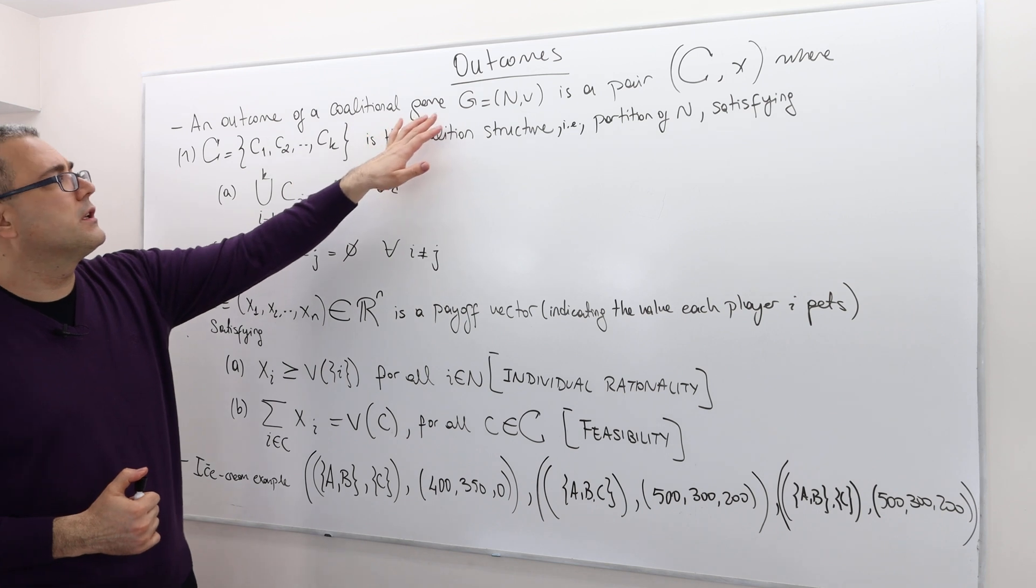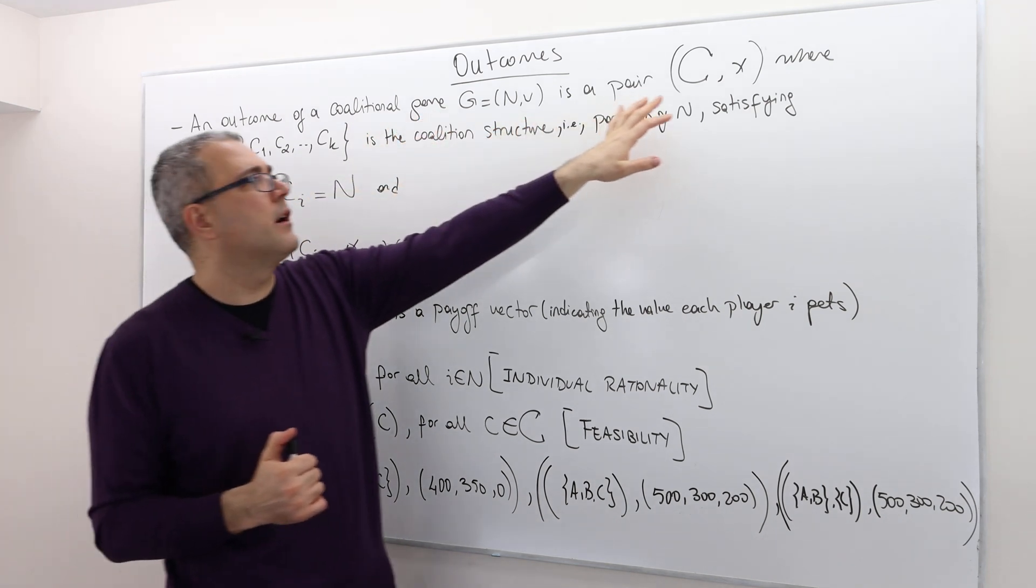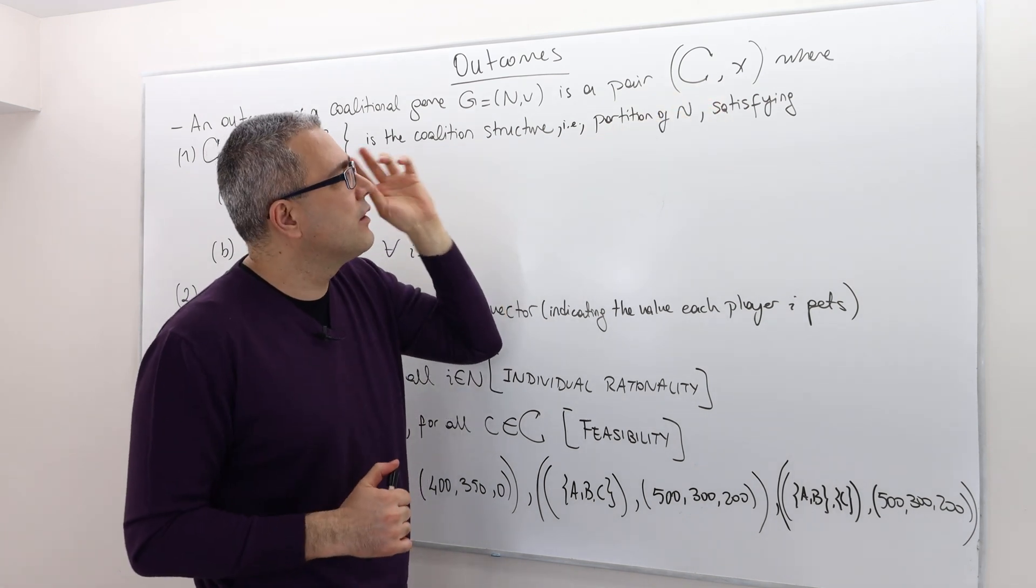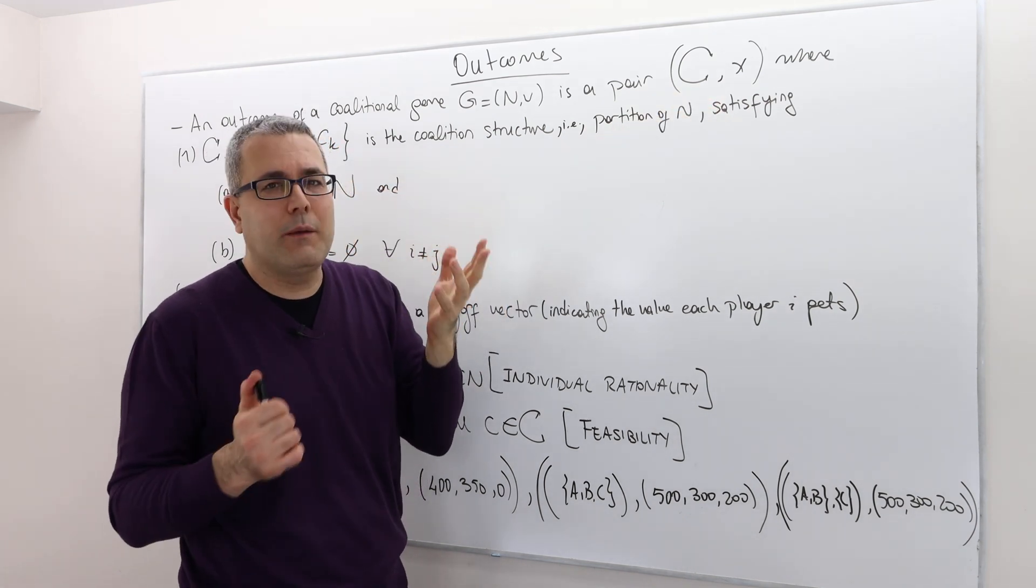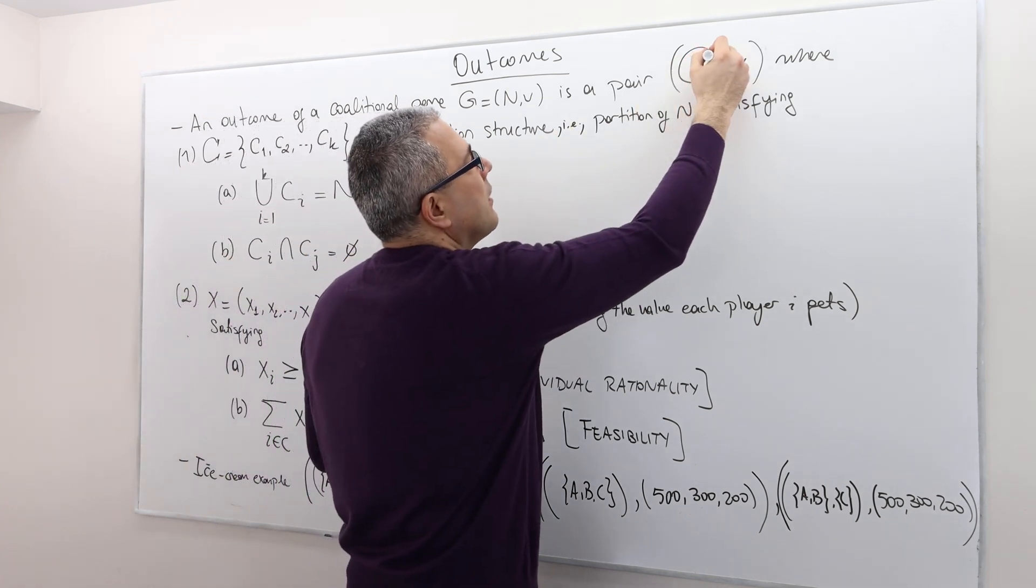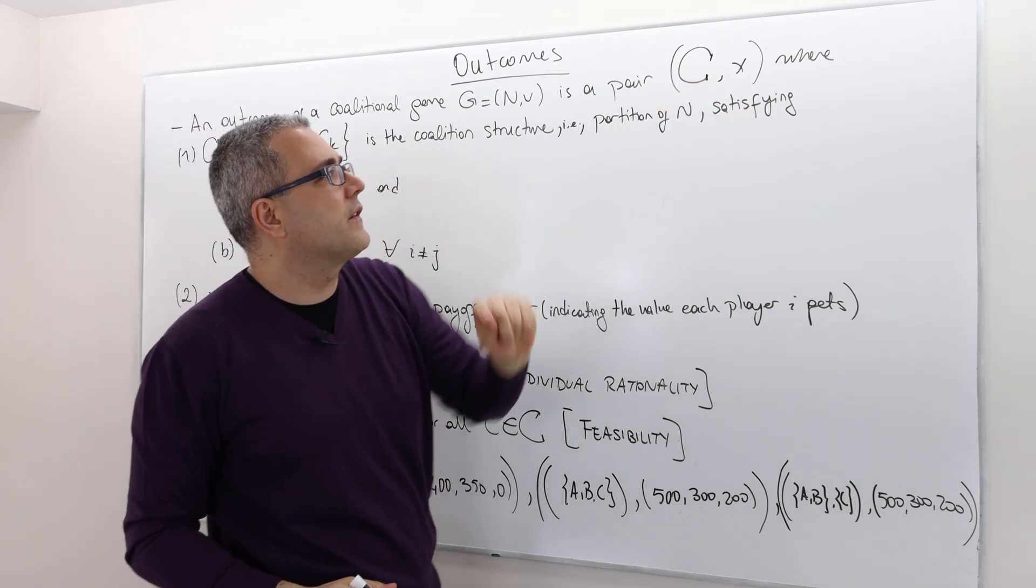So for any given coalitional game G, an outcome is a pair. Well this is sort of a C, but I just wanted to distinguish it from the capital C, so I just put some weird things here, so it's kind of a weird C. So C, X.